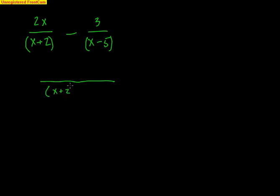But I'm just going to leave it like this for right now so you can see how it's going. What happens is the (x plus 2) fraction, for it to have that common denominator, it needs an (x minus 5). I'll put an (x minus 5) down there.